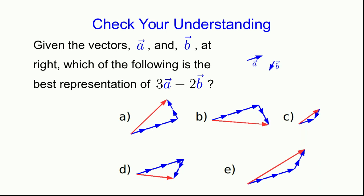So given vectors A and B that I've drawn over here, which of these is the best representation of 3A minus 2B?